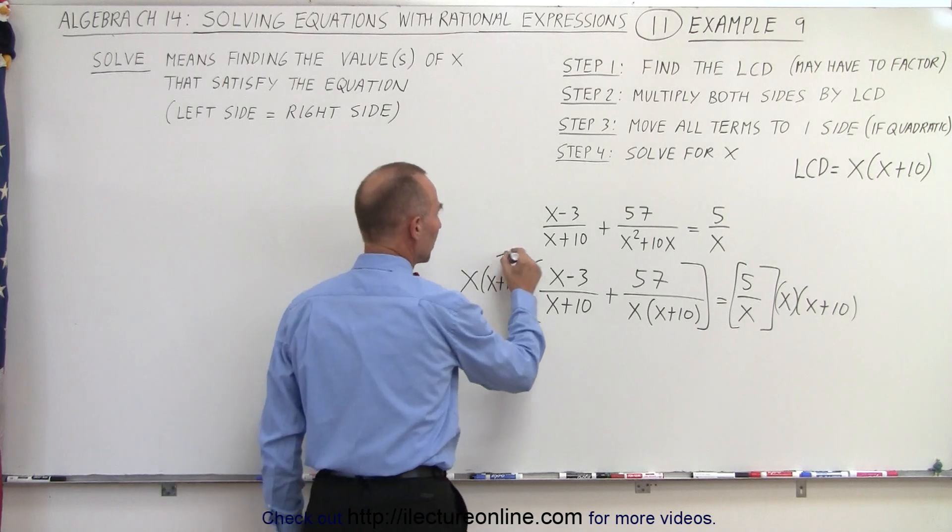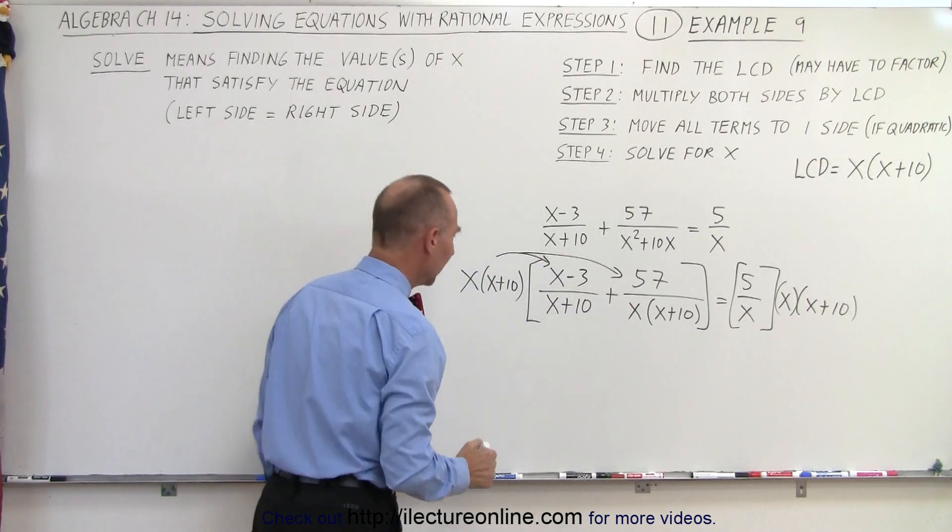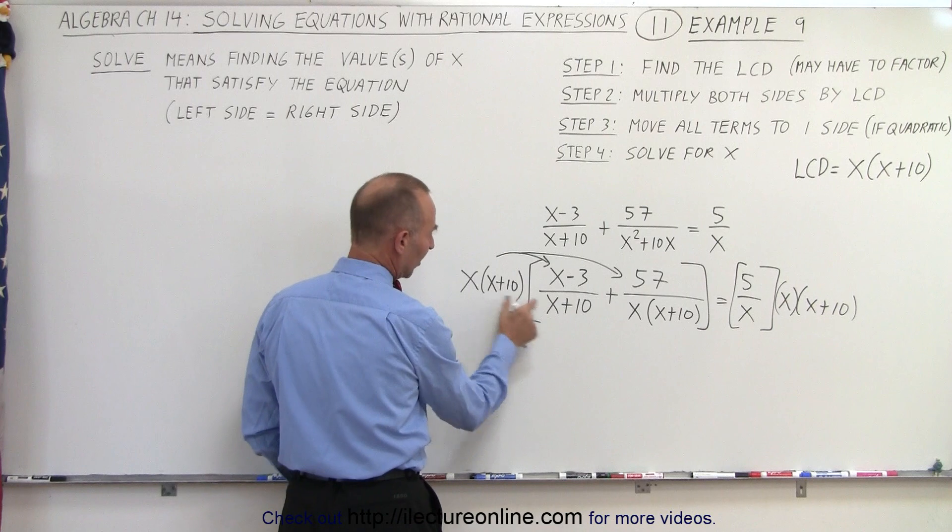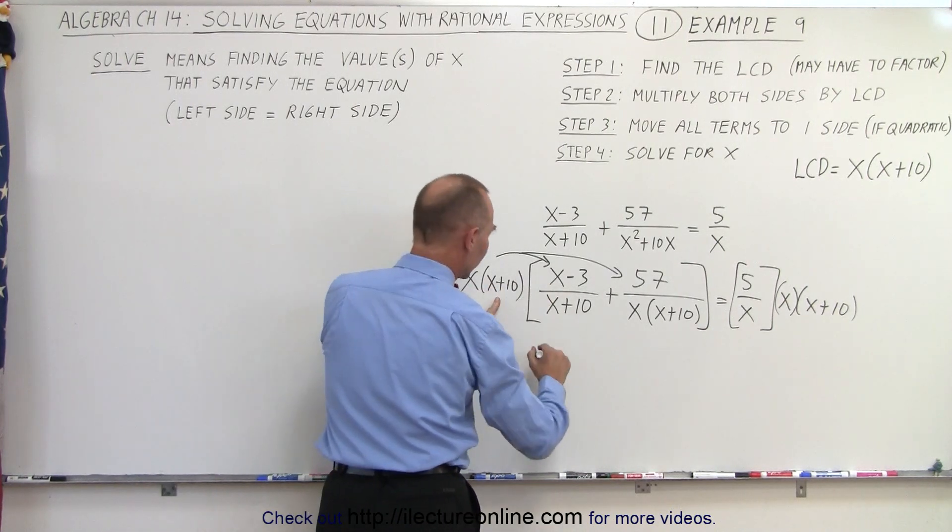Now this is going to be multiplied by both terms on the left side. And if we do that, notice that the x plus 10s cancel out and we're left with an x times x minus 3.